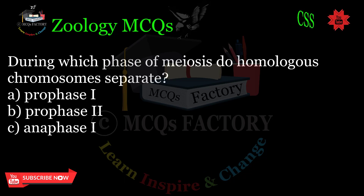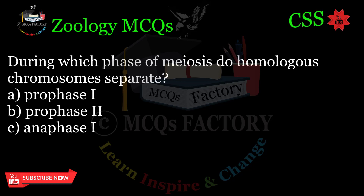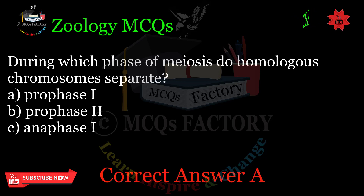During which phase of meiosis do homologous chromosomes separate? A. Prophase 1. B. Prophase 2. C. Anaphase. Correct answer: A.